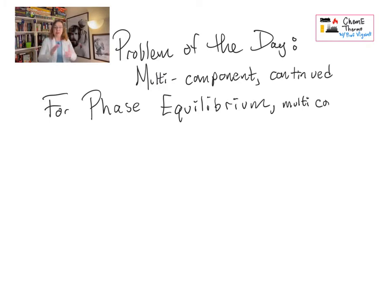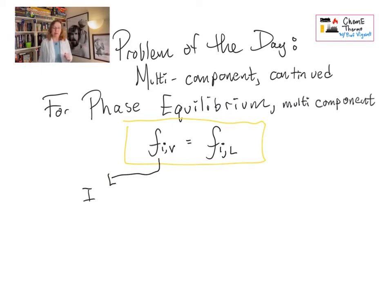For phase equilibrium in a multi-component system we still have fugacity equals fugacity, but we need to put a little tweak on it to make it match with the multiple things in our system. It's not merely fugacity of the vapor equals fugacity of the liquid. It's fugacity of sub-component i in the vapor equals the fugacity of that same component in the liquid. That is the thing that is true at equilibrium. How we solve this depends on how we choose to model both the vapor and the liquid.